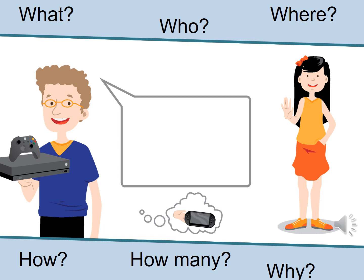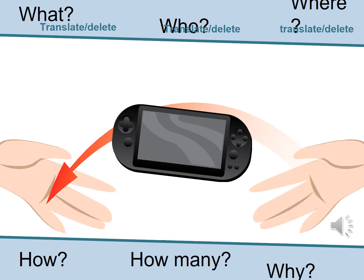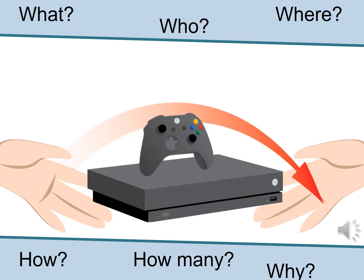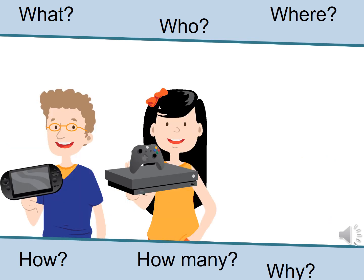Daniel said to her, great, I have an Xbox, but I want a Playstation Vita. The girl gave Daniel the Playstation, and Daniel gave the Xbox to her. They were both very happy.